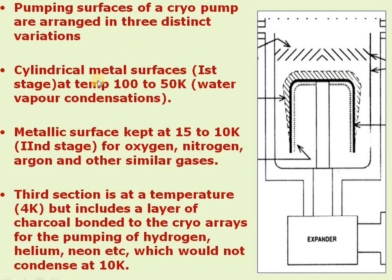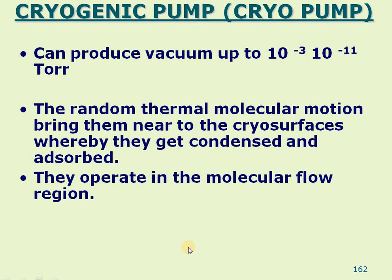This three-stage pumping process operates in a cryogenic pump. The first stage uses cylindrical metal surfaces kept at 100 Kelvin, gradually brought to 50 Kelvin for initial deposition. The second stage deposits oxygen, nitrogen, and argon by entrainment. The third stage at 4 Kelvin uses charcoal on steel surfaces to catch all remaining molecules. This pump can generate pressures ranging from 10⁻³ Torr to 10⁻¹¹ Torr.